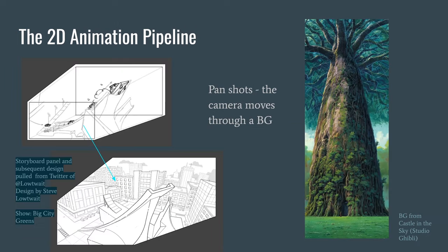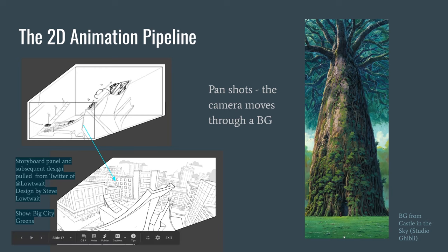A pan shot is where the camera moves through the background. In these Big City Greens examples from Steve Lotwit's Twitter, the camera's start position differs from its end position. In one example, a tree is distorted by camera distortion — it might look weird as an illustration, but as the camera moves up through the space, we want the feeling of the camera physically turning upward, so the background has to be painted that way. This isn't always thought about outside a studio setting, but it's super important to be aware of.